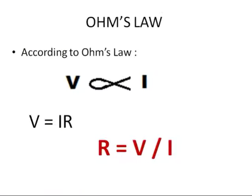Now coming to Ohm's law. According to Ohm's law, the potential difference across a conductor is directly proportional to the current flowing through the conductor. If we remove the proportionality sign, we place a constant R, so V is equal to IR. Equating for R, R is equal to V upon I.